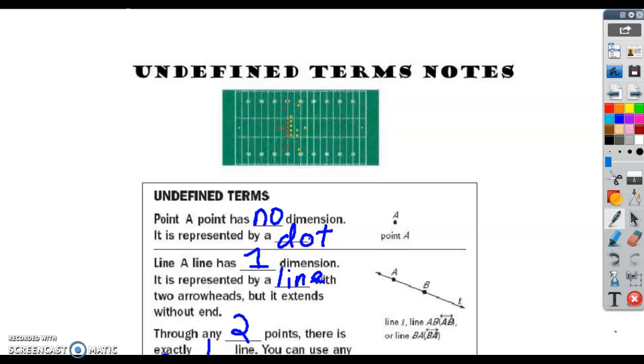So we're going to start with undefined and defined terms in geometry. Undefined just means we've got three terms: a point, a line, and a plane. I'm sure you've heard those words before. We just can't define them. We can describe them, but we can't really formally define them.